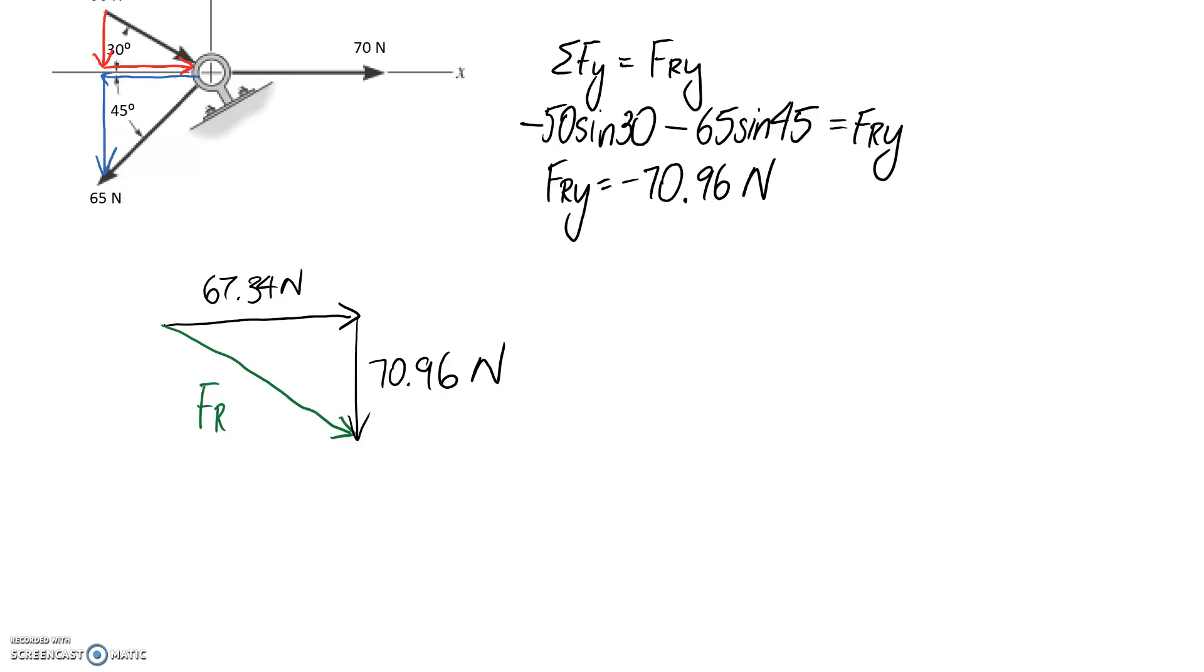Since this is looking at x and y directions, these are always going to form right-angled triangles when you have the x and the y components. Using our Pythagorean theorem rule for right-angled triangles, we can figure out that the resultant FR is going to be the square root of the two other sides, so 67.34 squared plus 70.96 squared. This comes out to be about 97.8 newtons.